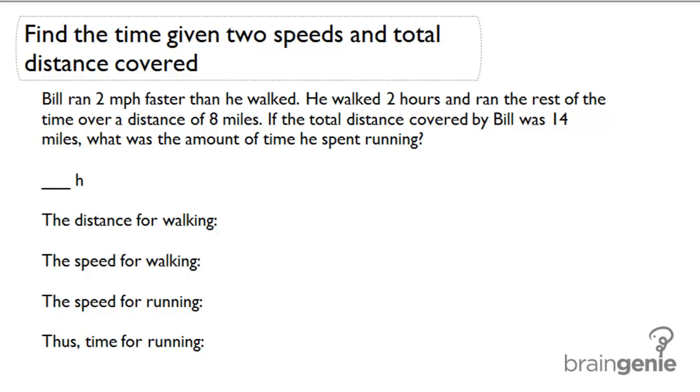Find the time given two speeds and total distance covered. Bill ran two miles per hour faster than he walked. He walked two hours and ran the rest of the time over a distance of eight miles. If the total distance covered by Bill was 14 miles, what was the amount of time he spent running?